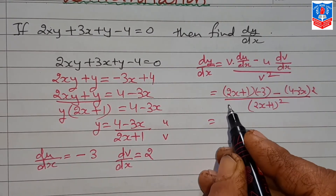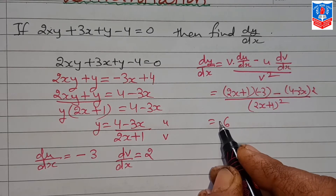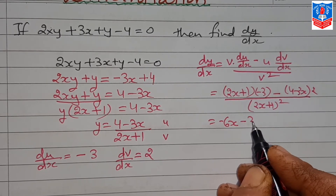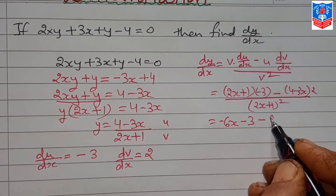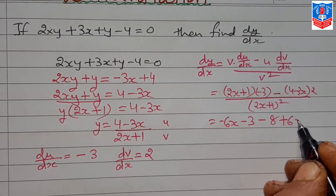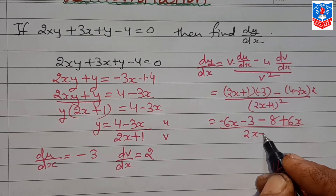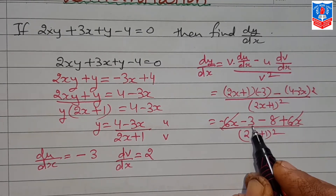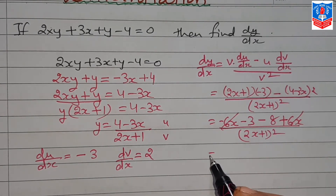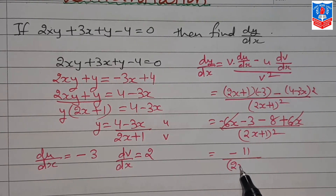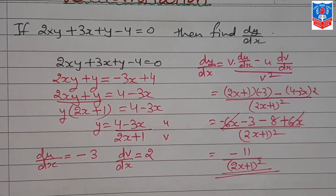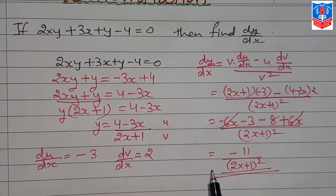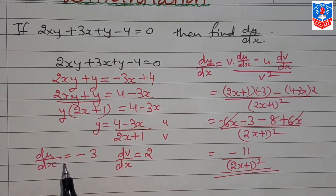Multiplying out: (2x+1)(-3) gives -6x - 3, and (4-3x)(2) gives 8 - 6x, but with the minus sign it becomes -8 + 6x. So the numerator is -6x - 3 + 6x - 8. The -6x and +6x cancel. We get -3 - 8 = -11. So the final answer is dy/dx = -11/(2x+1)². This is how we solve the type of sum where x and y values are together.